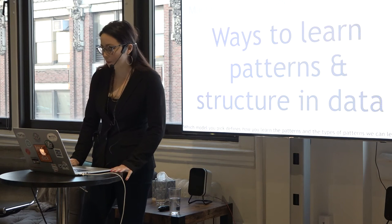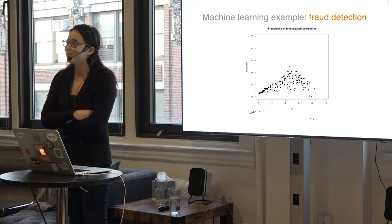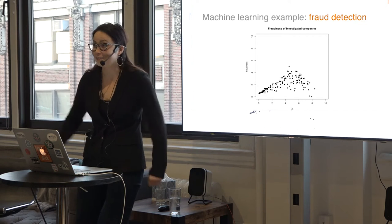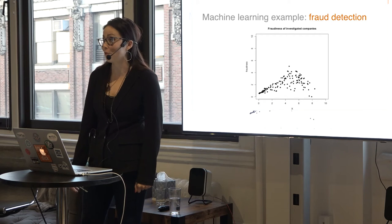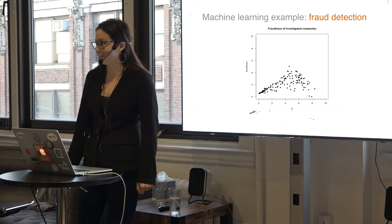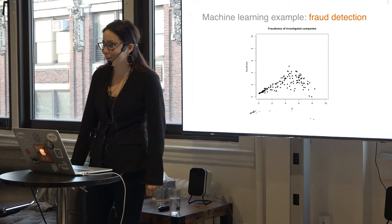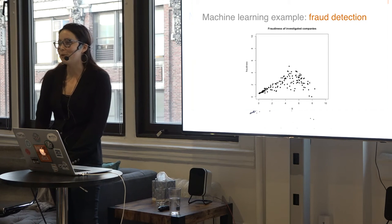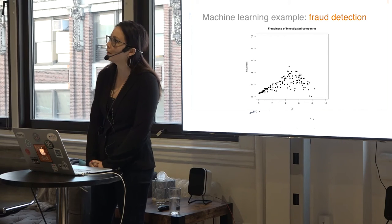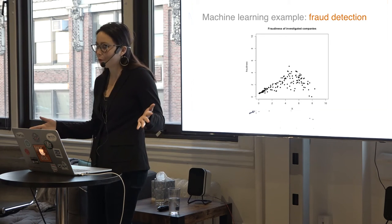I'll illustrate this with a simple example I made for an accounting conference on fraud detection. Let's say we've investigated a set of companies in the last year, and we're predicting the "fraudiness" of a company — yes, that's a technical term I learned at the conference — based on some variable X that we can measure. We plot fraudiness against X for all the companies we investigated, then apply machine learning — a fancy algorithm I'll call "draw a line through the points" — to learn the pattern. This red line corresponds to our prediction for any given value of X.